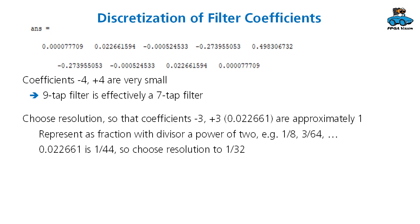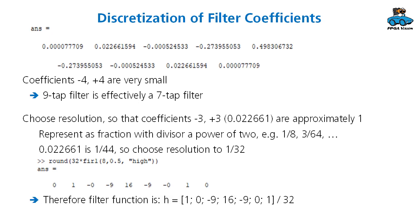For an efficient implementation, we want to have discrete filter coefficients. We choose the resolution so that the coefficients minus three plus three are approximately one. And we want the coefficients as a fraction with a divisor as a power of two. This coefficient 0.022661 is about one divided by 44. So we're rounding a bit and choosing a resolution of one divided by 32. We take our coefficients, multiply them with 32 and round them. And then we get these values and the filter function that you see here.